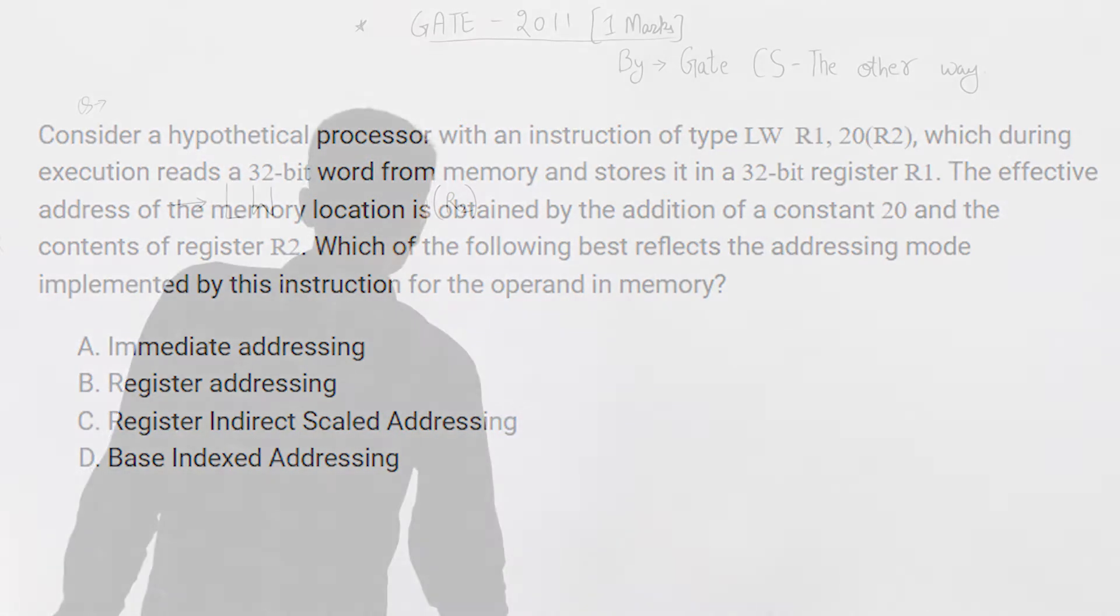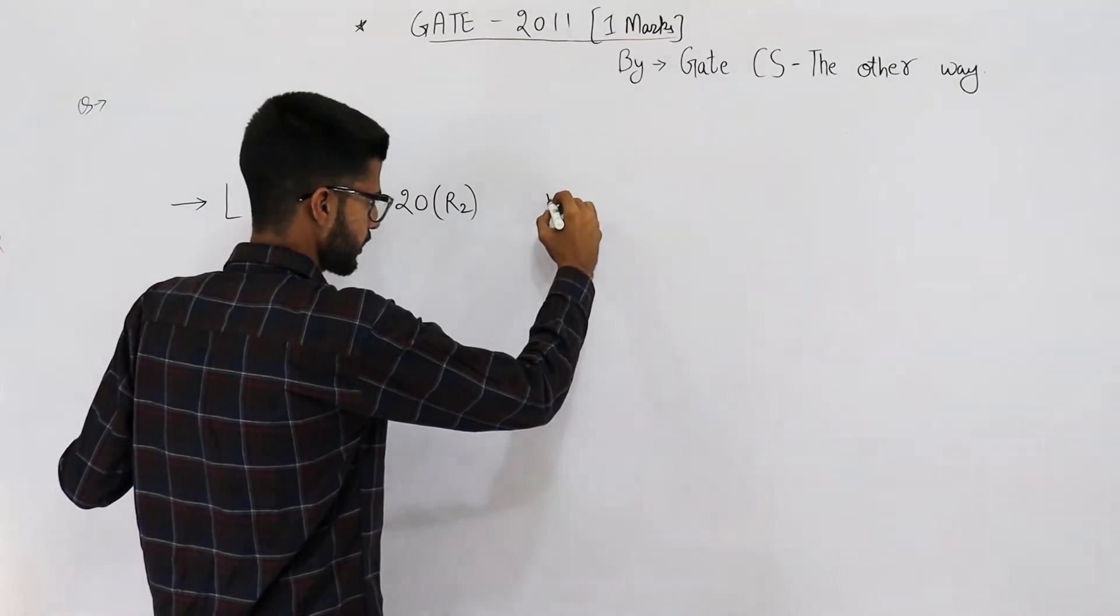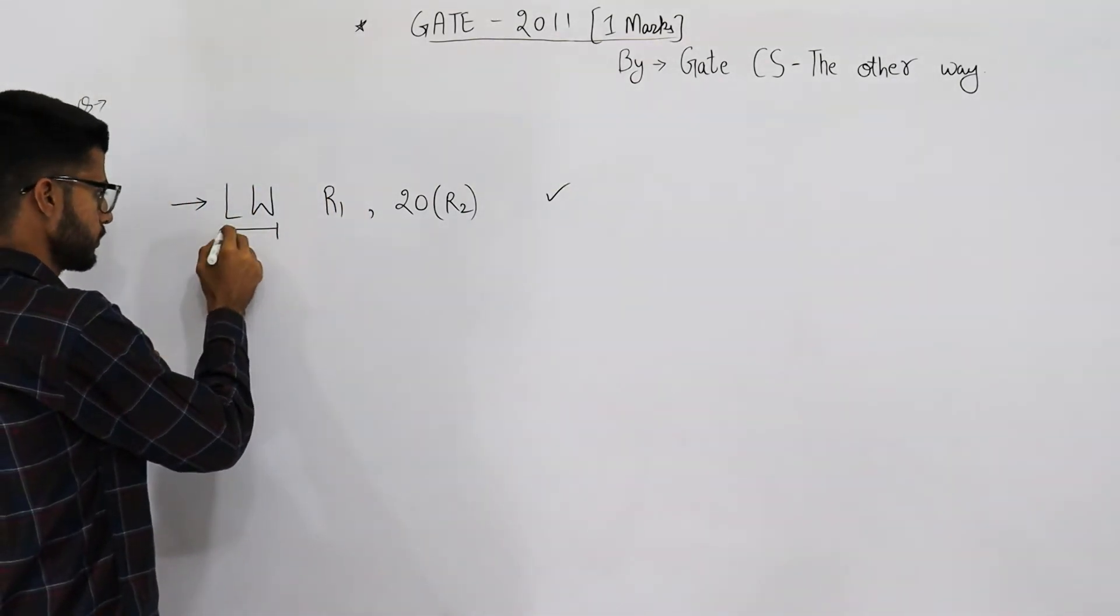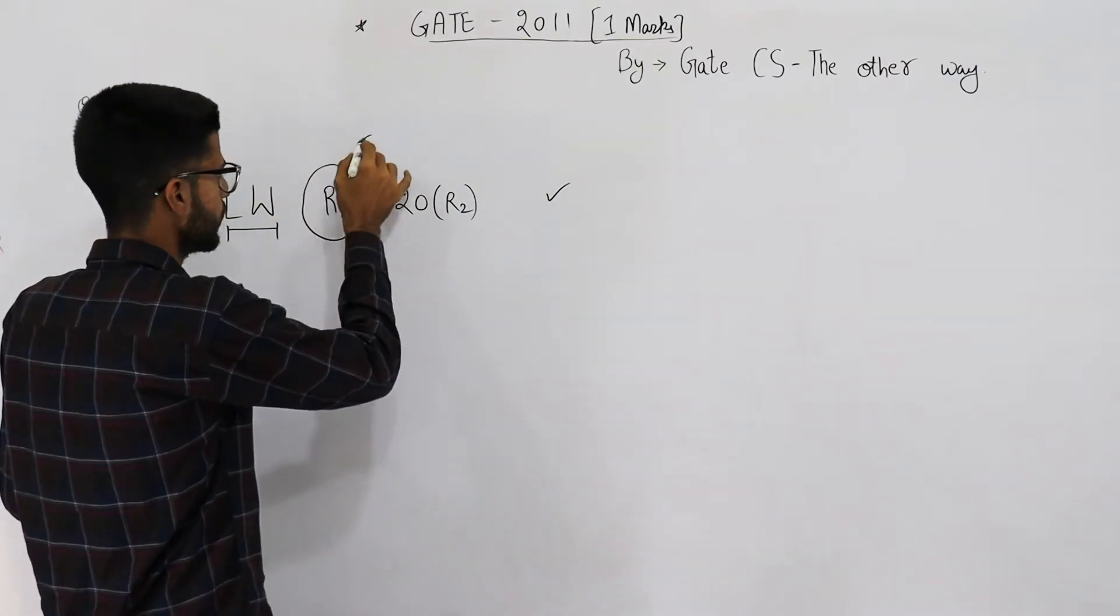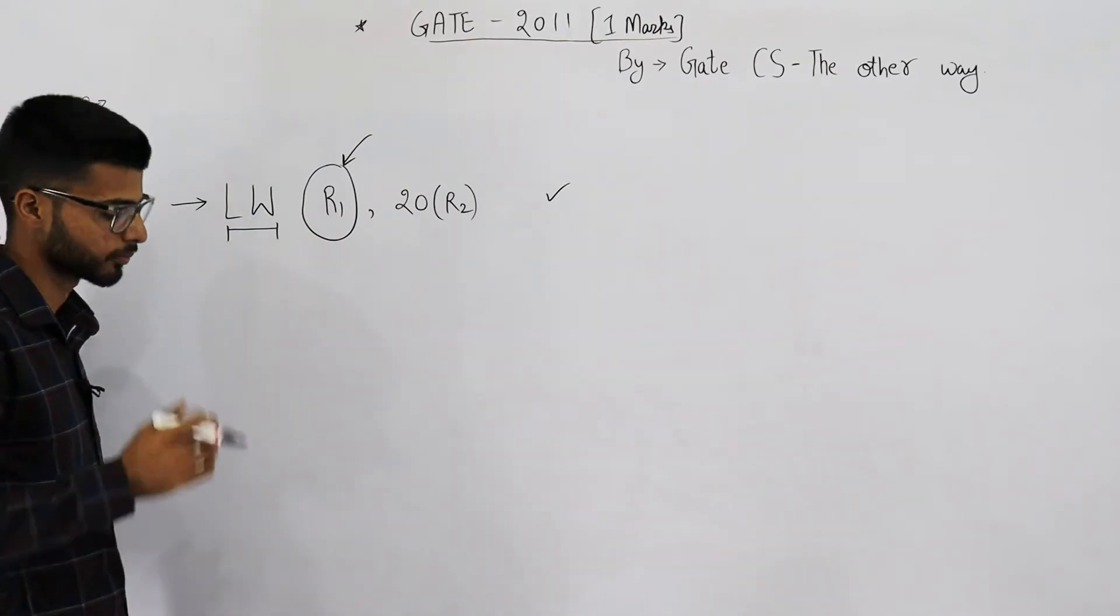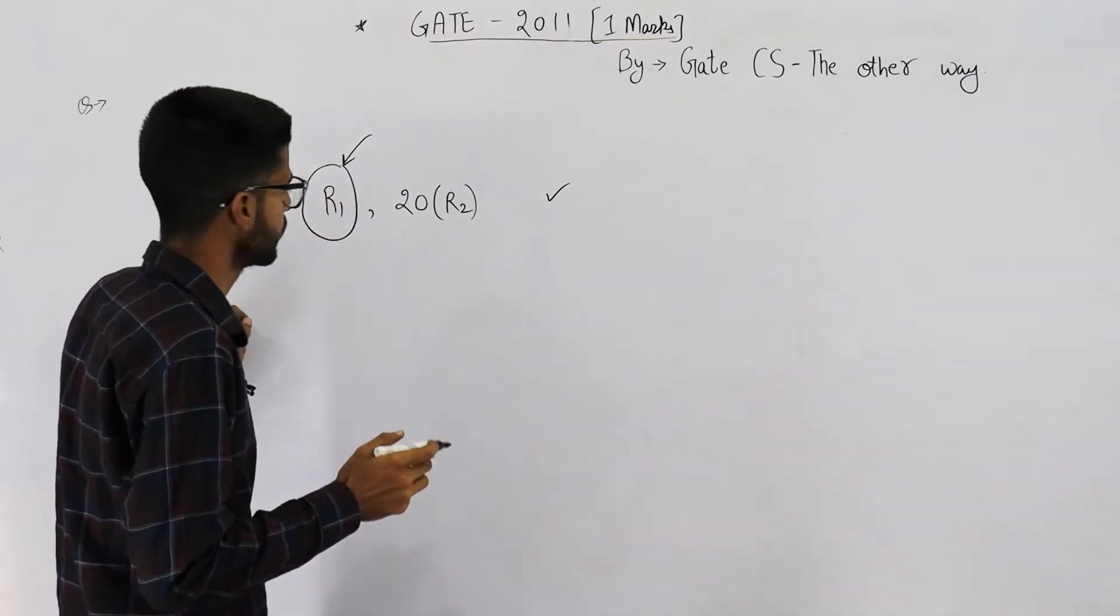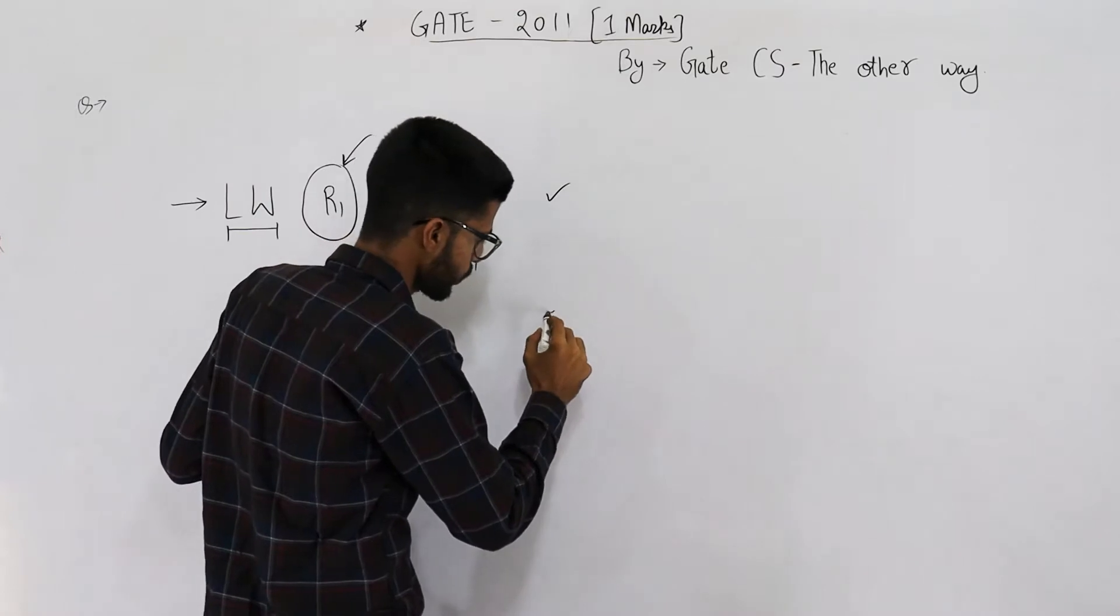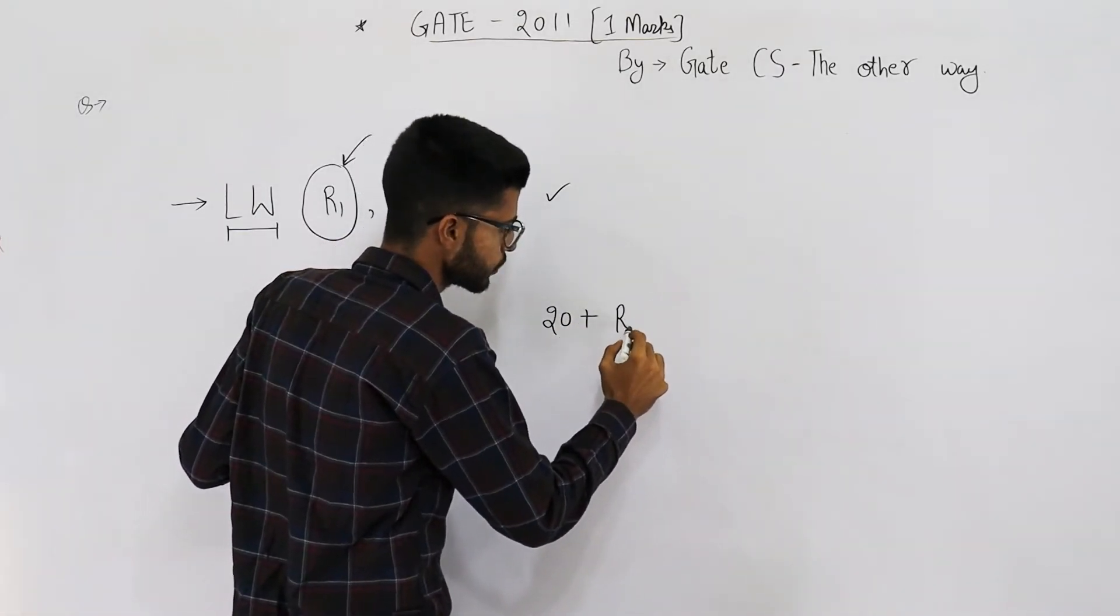So this instruction LW is for load word. Load word into this register named R1. So you are loading something into this register. Now the data that has to be loaded in this register will be found on this address. What's this address? It's 20 plus contents of register R2.